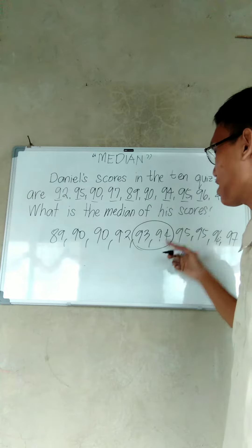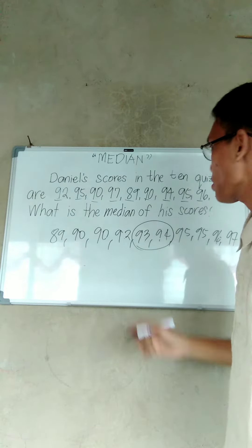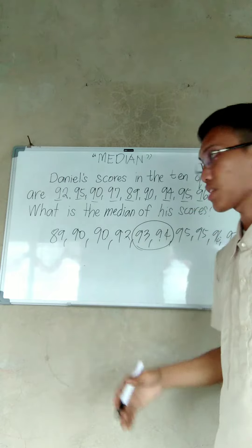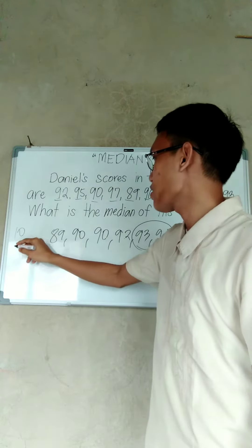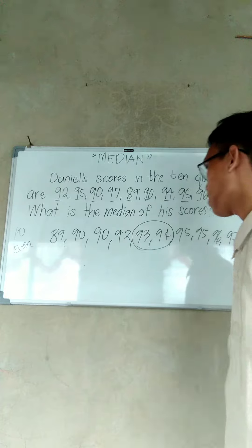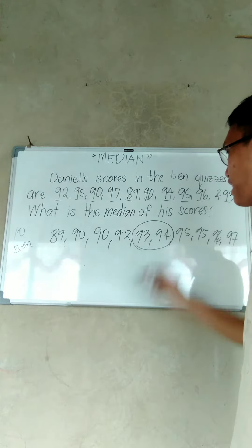93 and 94, because the total number of scores is even—it's 10. So therefore, the middlemost numbers are two: 93 and 94.